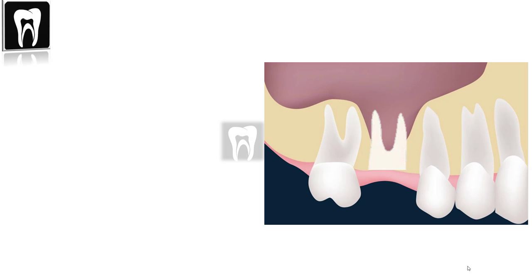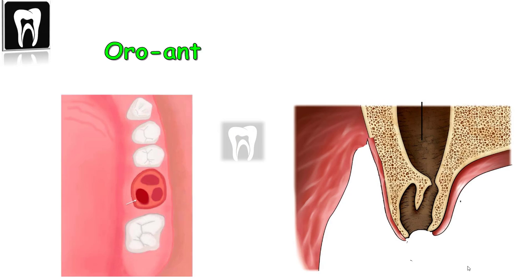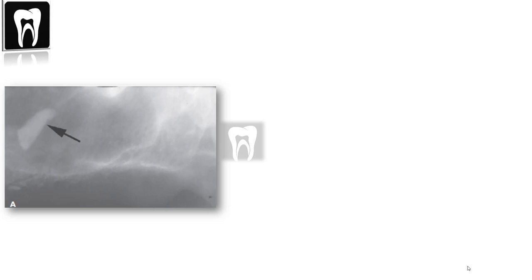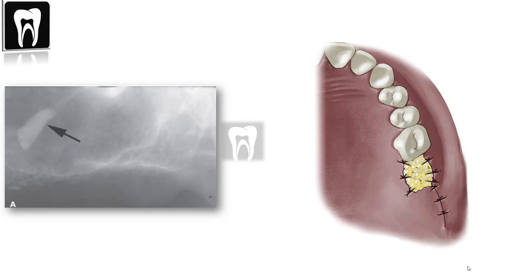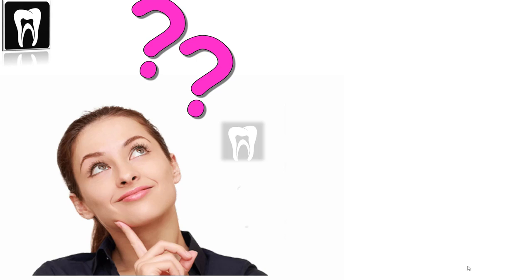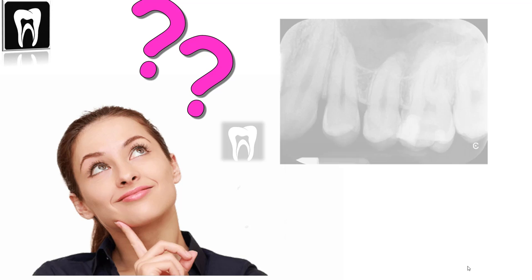Today I had a patient referred by a general dentist with a complication where one of the roots of the maxillary second molar was displaced into the maxillary sinus and had caused an opening between the mouth and the sinus. After taking the x-ray, we sent the patient back to remove the root and close the opening. A key question is: how can we determine the correct position of the tooth roots in relation to the maxillary sinus just by looking at radiographs?